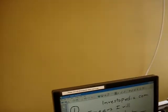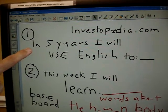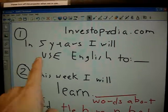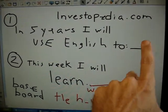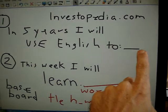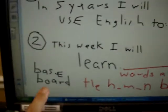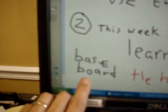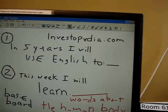There are two rules in my class. You need to know your goals. In five years, I will use English to... and you explain that — that's your big goal. And this week: maybe I will become a doctor, so this week I want to learn the words in a human body. Or I will buy a house, so I need to learn words like 'baseboard.' This right here is the baseboard. That's part one.